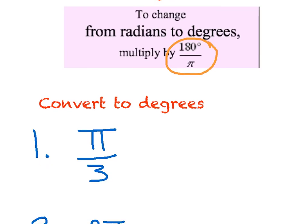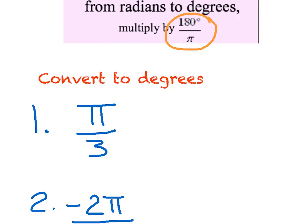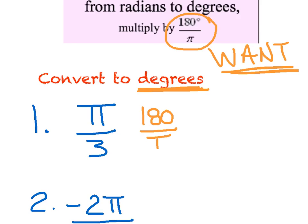And like I said, it's easy to get the two rules confused. But just say to yourself, what you want goes on top. Do you want a degree or do you want a radian? So if it says to convert to degrees, I want degrees, so I know the 180 goes on top, over pi. What you want goes on top.